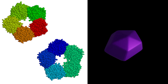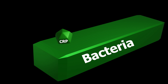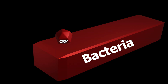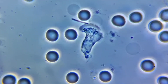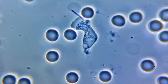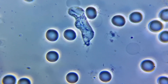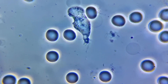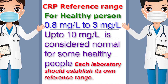Increased levels of CRP bind to phosphocholine on microorganisms and assist in complement binding to foreign substances and damaged cells, enhancing phagocytosis by macrophages. This process is called opsonin-mediated phagocytosis. In simple terms, CRP tags foreign substances and damaged cells for easy identification by phagocytes for phagocytosis.